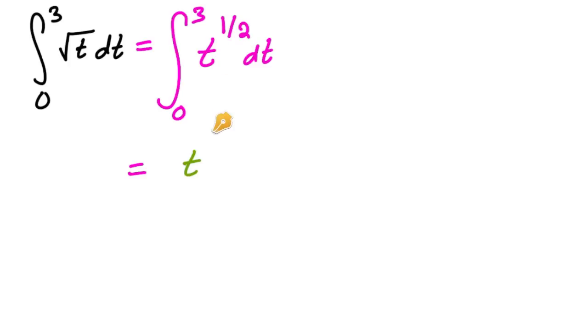We're going to have t to the 1 half plus 1 is 3 halves. And then remember, instead of dividing by 3 halves, we're going to multiply by the reciprocal, which is 2 thirds. And then this we're going to evaluate from 0 to 3.